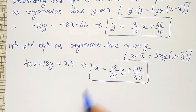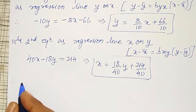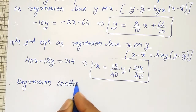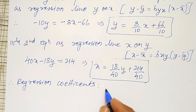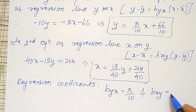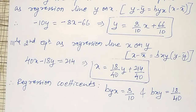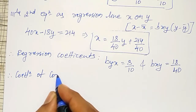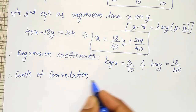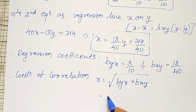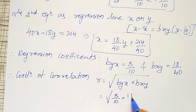From these two regression lines, I can identify the regression coefficients. Therefore, BYX = 8/10 and BXY = 18/40. Using them, I have to find the coefficient of correlation. Therefore, the coefficient of correlation R = √(BYX × BXY) = √(8/10 × 18/40). You can use a calculator for that.